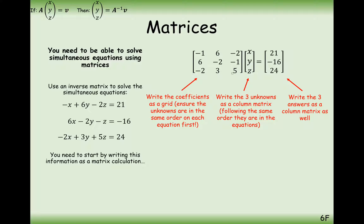On the third line here, we have minus 2x plus 3y plus 5z equals 24, which is exactly what we have as the third equation here. Then we've got equals 21 minus 16, 24, and that obviously comes from what these three variables equal.